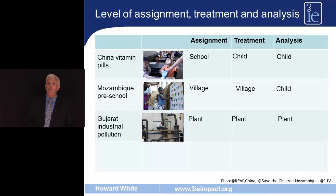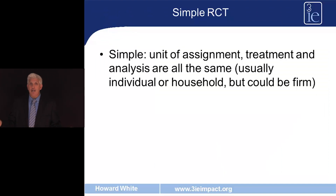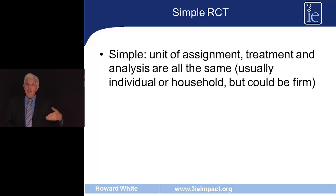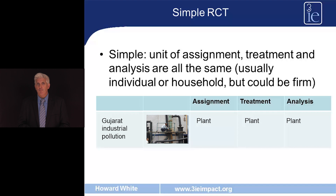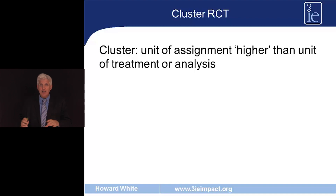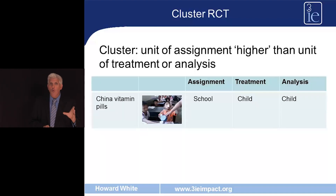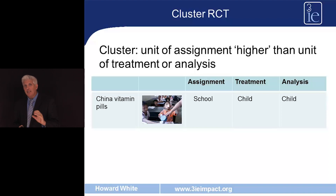Depending on the unit of assignment and analysis, an RCT may be either a simple RCT or a cluster RCT. A simple RCT is one in which the unit of assignment, treatment, and analysis are all the same — often the individual or household, but could be the firm or school. The Gujarat industrial pollution study is an example of a simple RCT. A cluster RCT is one in which the unit of assignment is at a higher level than the unit of treatment or analysis — as in the China anaemia study, where the school was the unit of assignment but each school contains many children subject to the treatment and analysis.